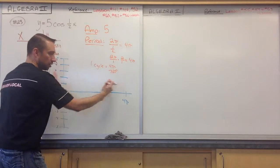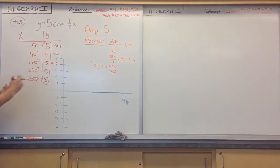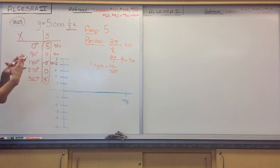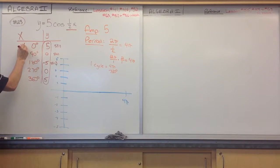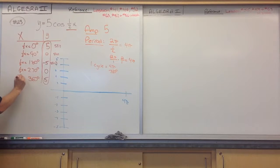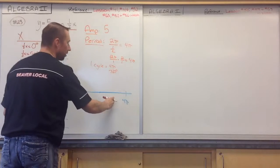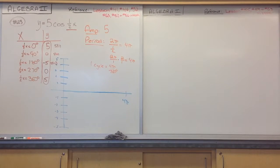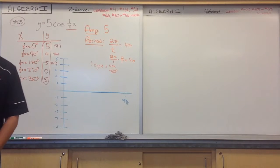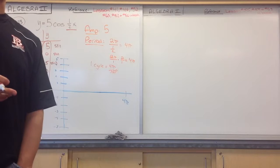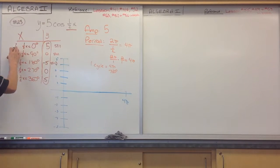Now we've got to worry about the x values — the radians or degrees — because I have a 1 half in front. It's going to stretch the function horizontally. I've got to set 1 half x equal to each of those degree values and solve for x. To solve, I divide by 1 half, or equivalently multiply both sides by 2.